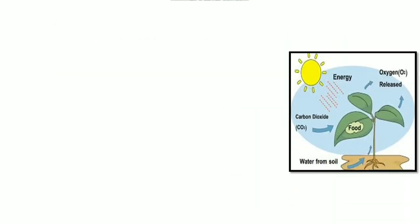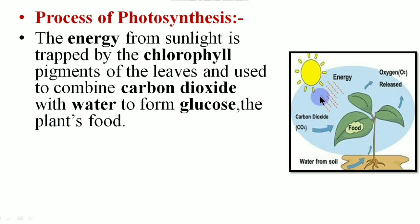Let us study the process of photosynthesis. The energy from sunlight that is the radiant energy which is trapped by the chlorophyll. So they trap the solar energy and carbon dioxide from the atmosphere which enters into the leaf cells whereas water from the soil passes through the root hair and reaches to the cells of the leaves.